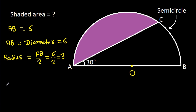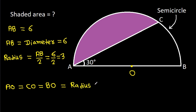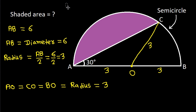Then AO is equal to CO, which is equal to BO — that is the radius. So AO is 3, BO is 3, and CO is 3.